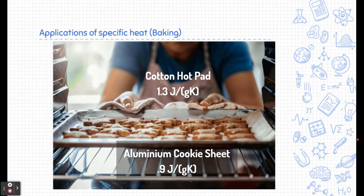Let me give you some applications of specific heat. One application is in baking. If you've ever baked cookies before, you know that you put cookies on an aluminum cookie sheet. Now aluminum itself has a specific heat of 0.9 joules per gram Kelvin. And when you pull that aluminum pan out of the oven, you typically use cotton pads that have a specific heat of 1.3 joules per gram Kelvin.